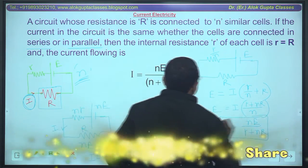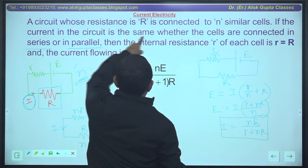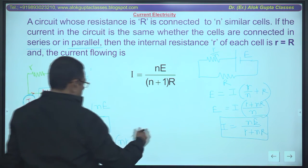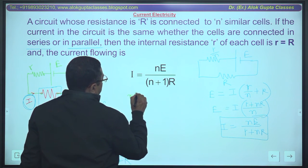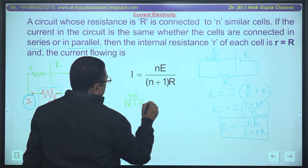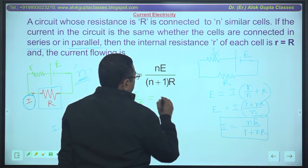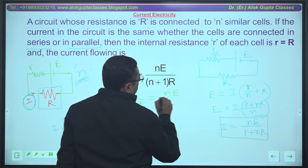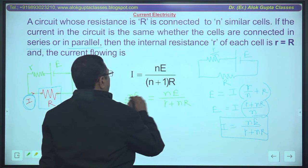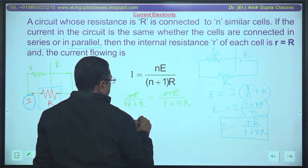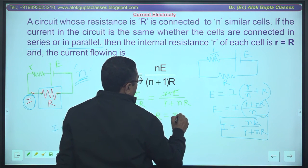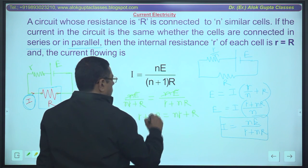Now, condition is current is same, current in the circuit is same. On equating these two, what will happen? Series combination: nE upon nr plus R, equals parallel combination: nE divided by r plus nr. Cross multiplication: r plus nr equals nr plus R.